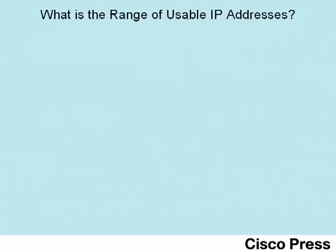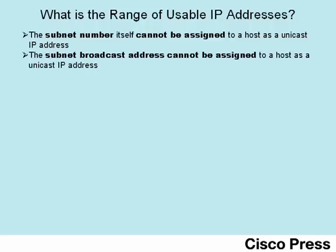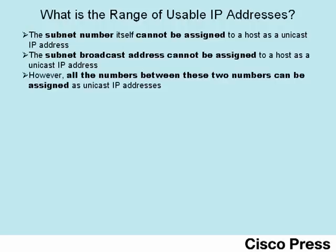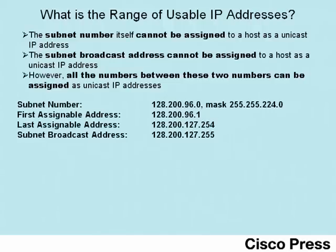Just to be clear, let me define what I mean by range of usable IP addresses. The subnet number itself cannot be assigned to a host as a unicast IP address, and the subnet broadcast address cannot be assigned to a host either. However, all the numbers in between the subnet number, which is the smallest, and the subnet broadcast address, which is the largest, can be used. For instance, with subnet number 128.200.96.0 and mask 255.255.224.0, the broadcast address is 128.200.127.255. So the first assignable address is one bigger than the subnet number, and the last assignable address is one less than the broadcast address.